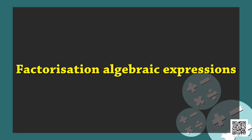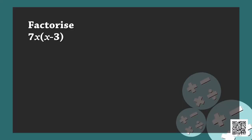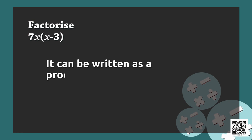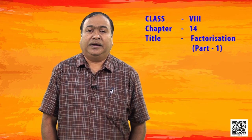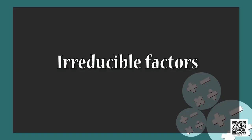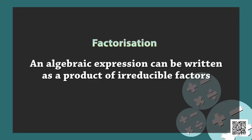I welcome all of you to today's class on factorization of algebraic expressions. Let us take an example: factorize 7x(x minus 3). It can be written as a product of 7x and x minus 3. We note that the factors 7x and x minus 3 cannot be factorized further. Such factors in algebraic expressions are called irreducible factors. Factorization means an algebraic expression can be written as a product of irreducible factors.